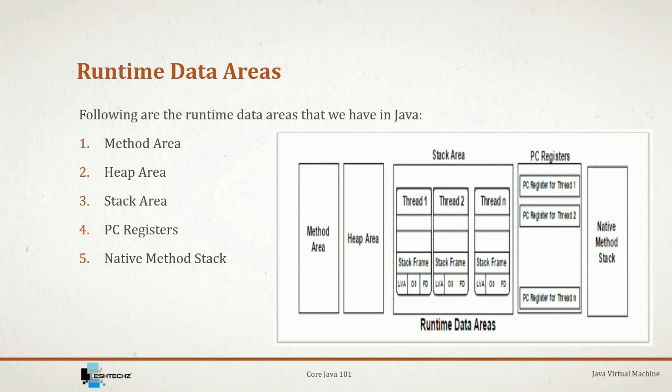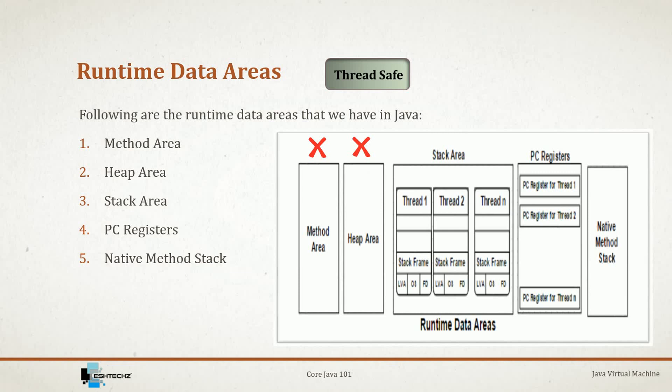Let's review which areas are thread-safe. Method area is not thread-safe, heap area is not thread-safe — the only area which is thread-safe is the stack area. Only method area, heap area, and stack area are the areas where objects will be created.